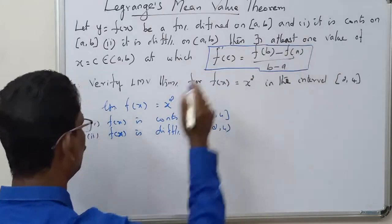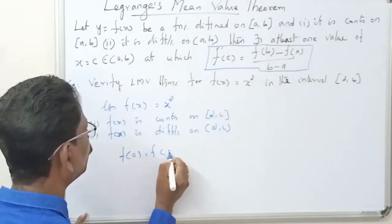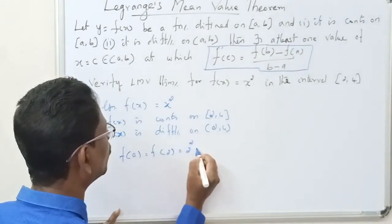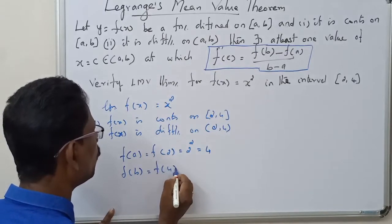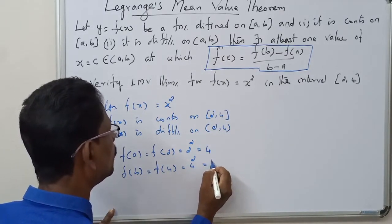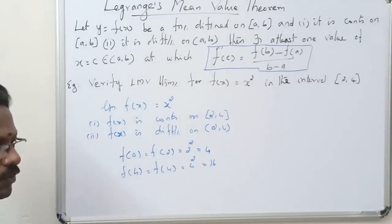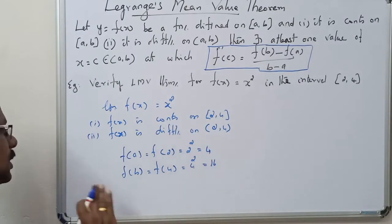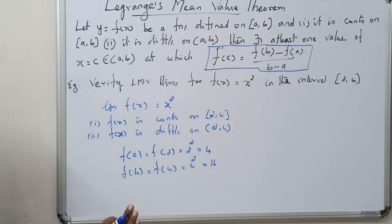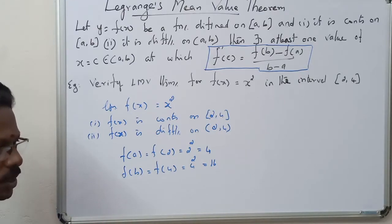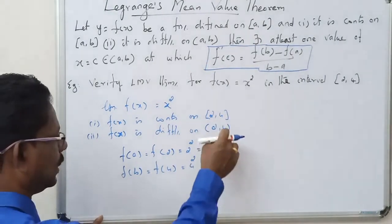Now we need f(b) and f(a). So f(a) = f(2) = 2² = 4. Then f(b) = f(4) = 4² = 16. Note that f(a) should not be equal to f(b) — that is the condition for Rolle's theorem. For Lagrange's mean value theorem, f(a) need not equal f(b), and here they are different values.